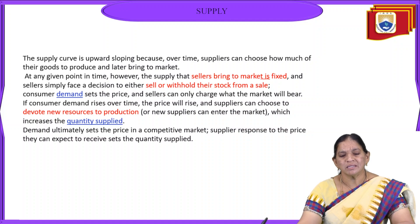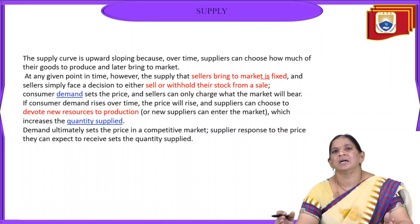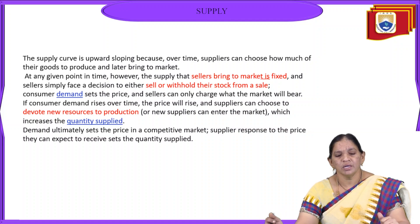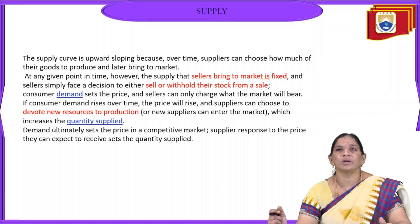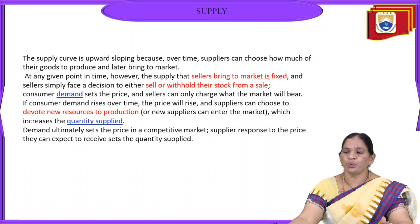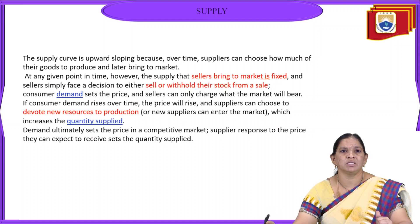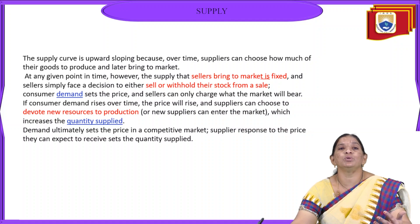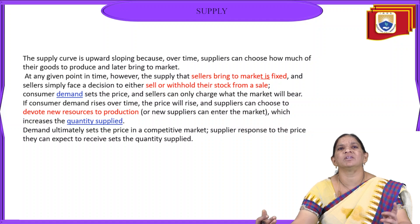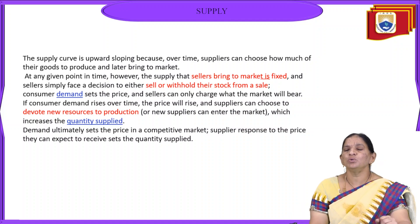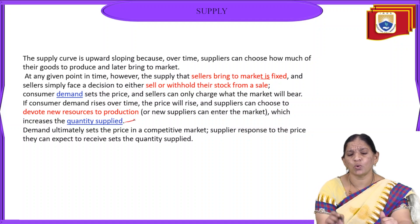The consumer demand sets the price, and the seller can only charge what the market will bear. The consumer sets the demand from the market side, but what quantity of goods comes to market is a decision by the producer. If goods demanded rises over a period, the price will also rise and supply should devote new resources to produce more. If existing resources are not enough, alternative resources are sought to provide the required supply in the market.